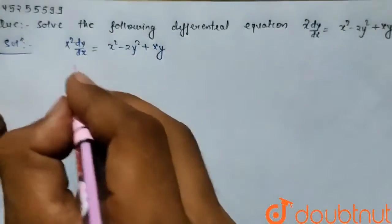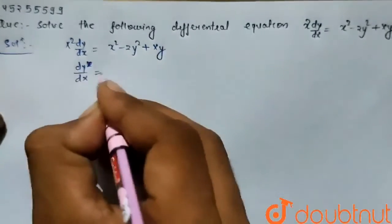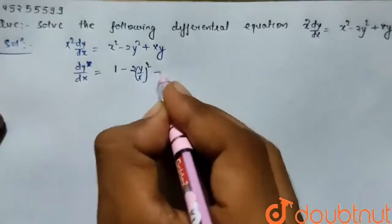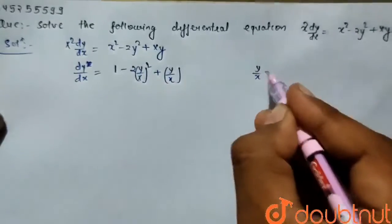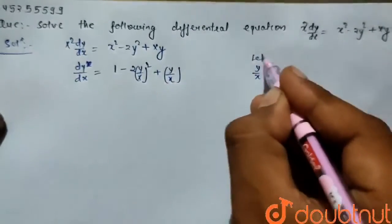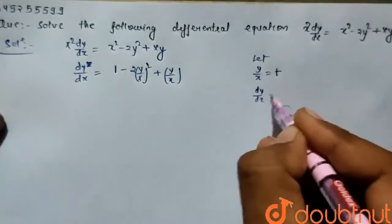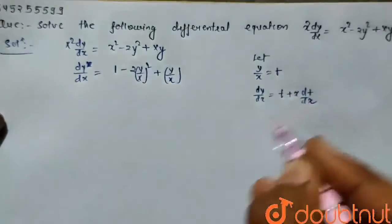Here on dividing by x squared, dy by dx equals 1 minus 2(y by x) whole square plus y by x. Let put y by x equals t.